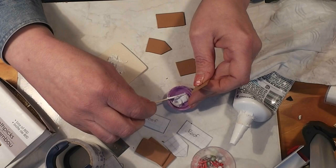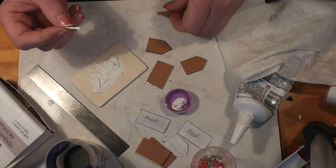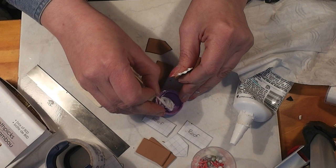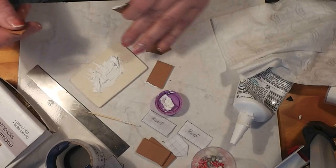All right, so we're going to take our sides. First, of course, you determine where on the board you're going to put your house before you start spreading your stuff on there. And this does clean up with soap and water before it cures, so it'll wash off of your hands just like acrylic paint.